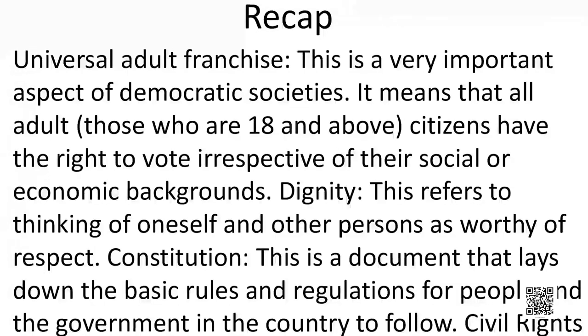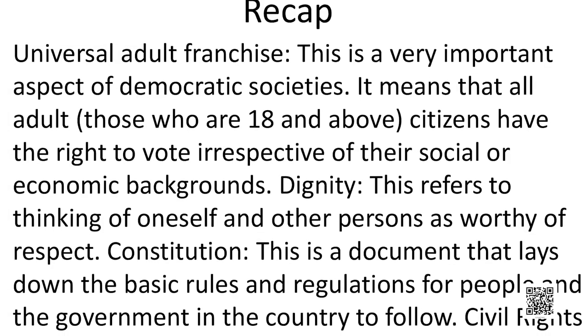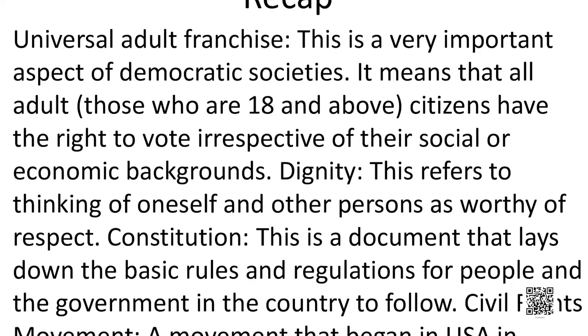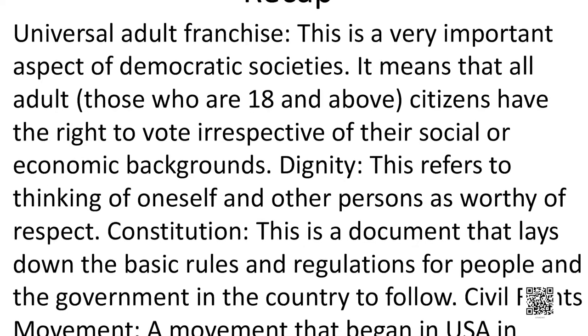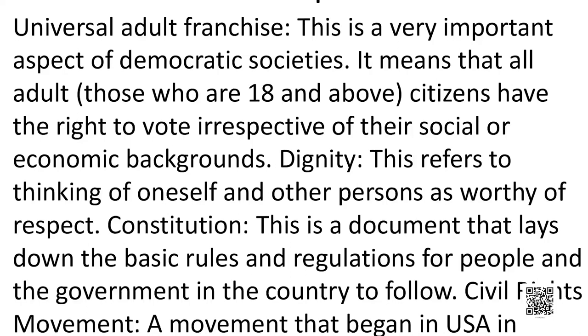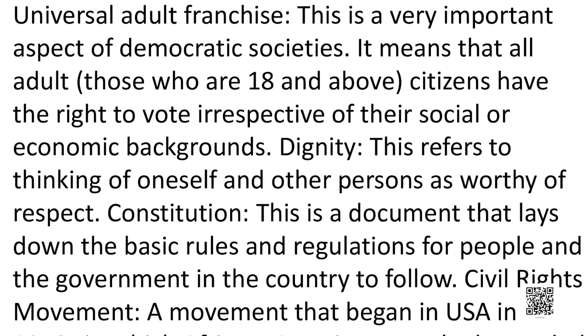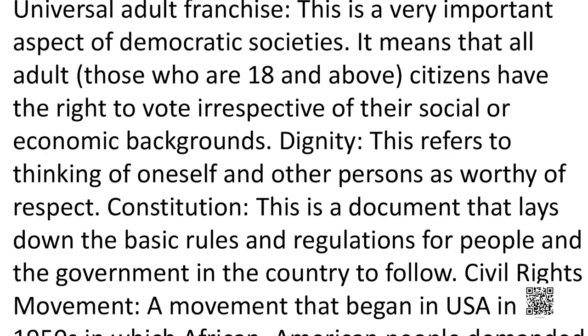As we learn about these things in different chapters of this book, think about whether the equality of all persons and their ability to maintain their dignity is upheld. Now let us have a quick recap of the important topics in this chapter. Starting with Universal Adult Franchise — it is a very important aspect of democratic society, meaning that those who are 18 and above have the right to vote irrespective of their social or economic backgrounds.